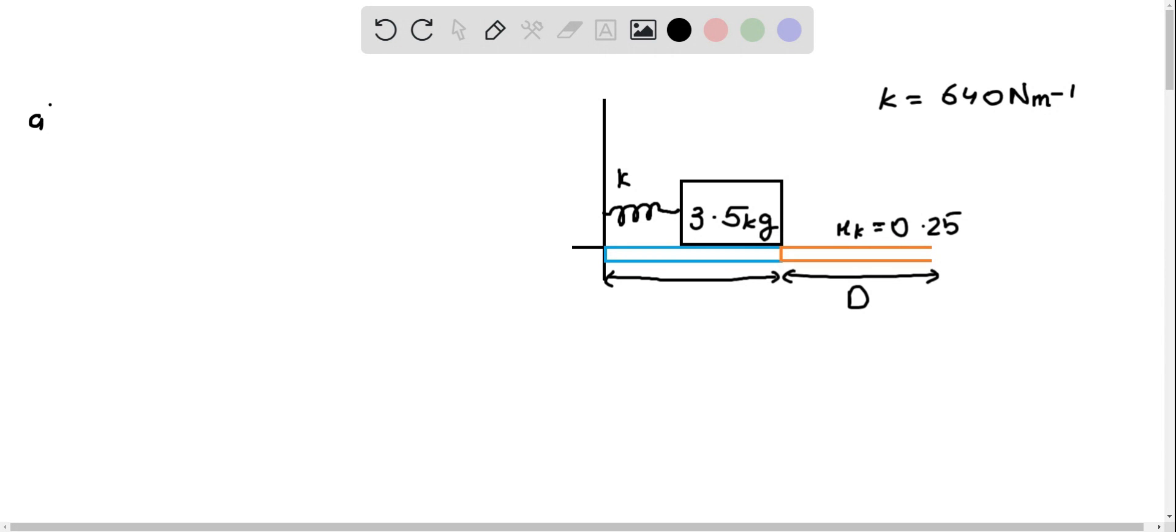Now for the first part, we need to find out the total thermal energy dissipated as the block travels a distance d, and d is given as 7.8 m, so d equals 7.8 m, and then it comes to rest.